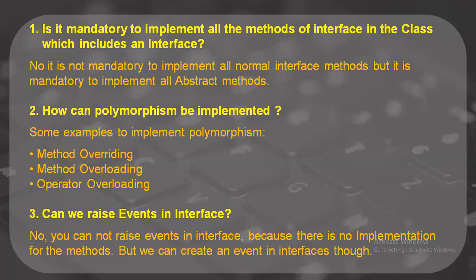The second question: how can polymorphism be implemented? There are three ways — method overriding, method overloading, and operator overloading. Method overriding and overloading are two different processes, and operator overloading is the third.